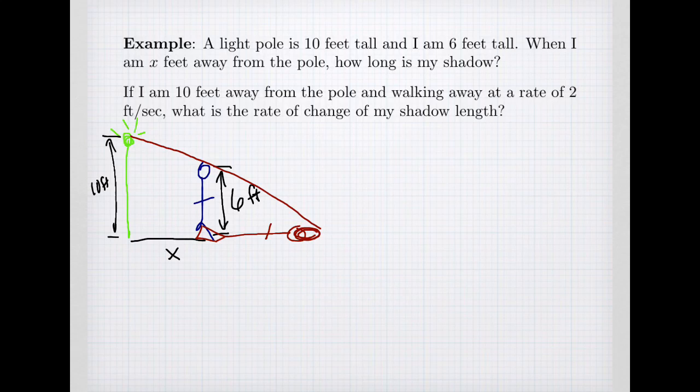Let's identify some variables. We have two variables. I have x, which is the distance I stand from the light, and s is the length of my shadow.